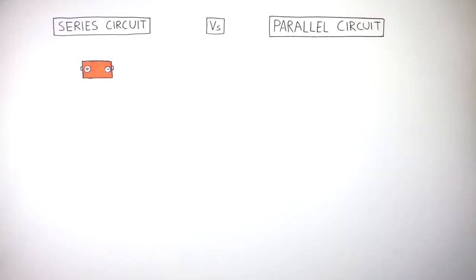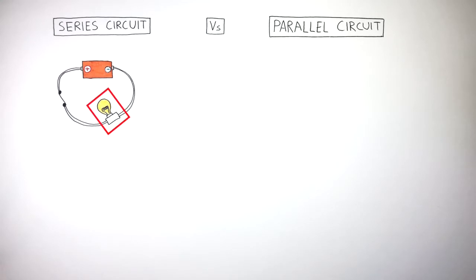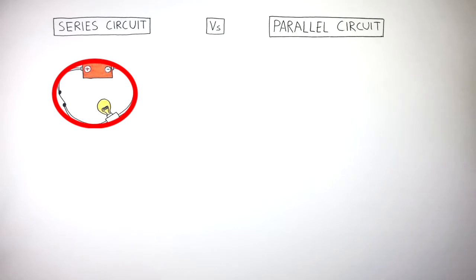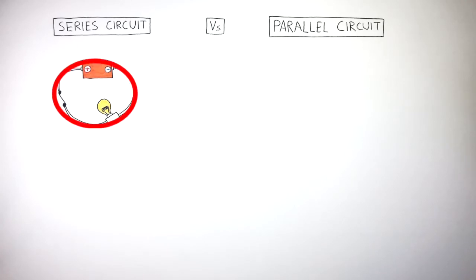Here is a cell with the positive terminal on the left and the negative terminal on the right. Connected to this cell is a wire, a lamp, and a closed switch. They are all connected in one complete loop. That is what makes a Series Circuit — a Series Circuit is when all the components and wires are connected in one complete loop.